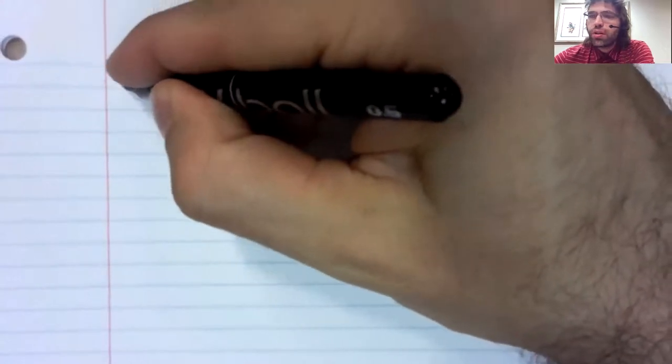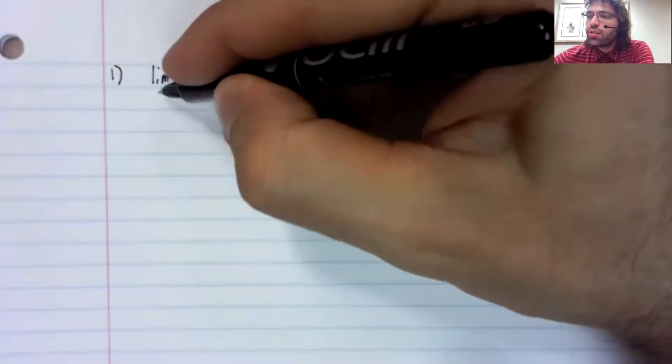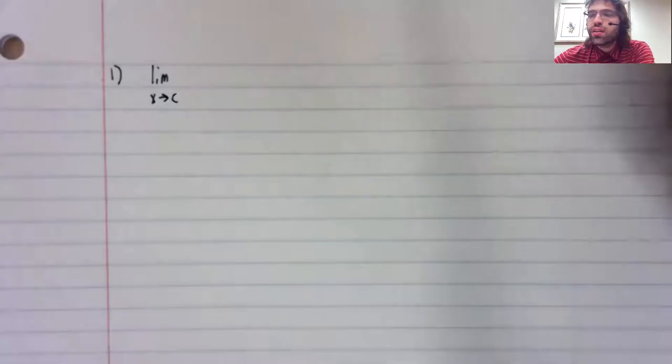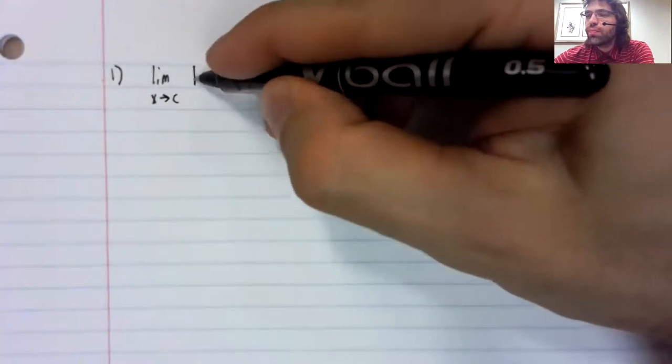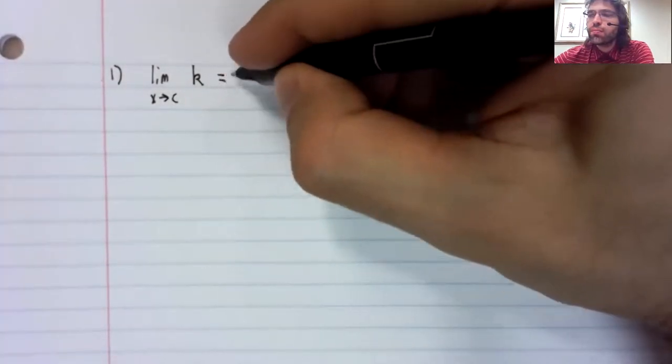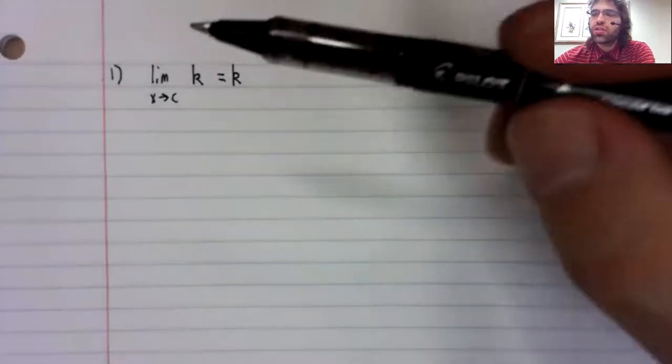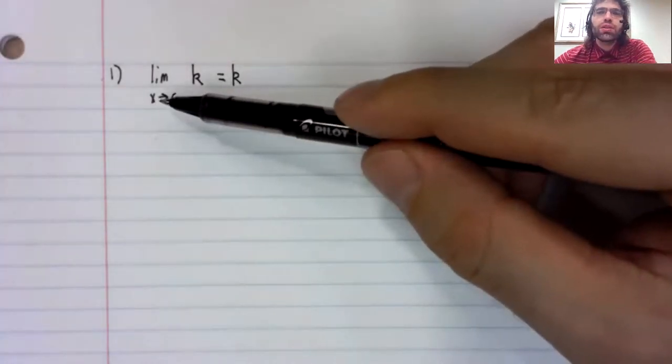We'll start with the basics. The limit as x approaches c of a constant function is always the constant. It doesn't matter what c is.